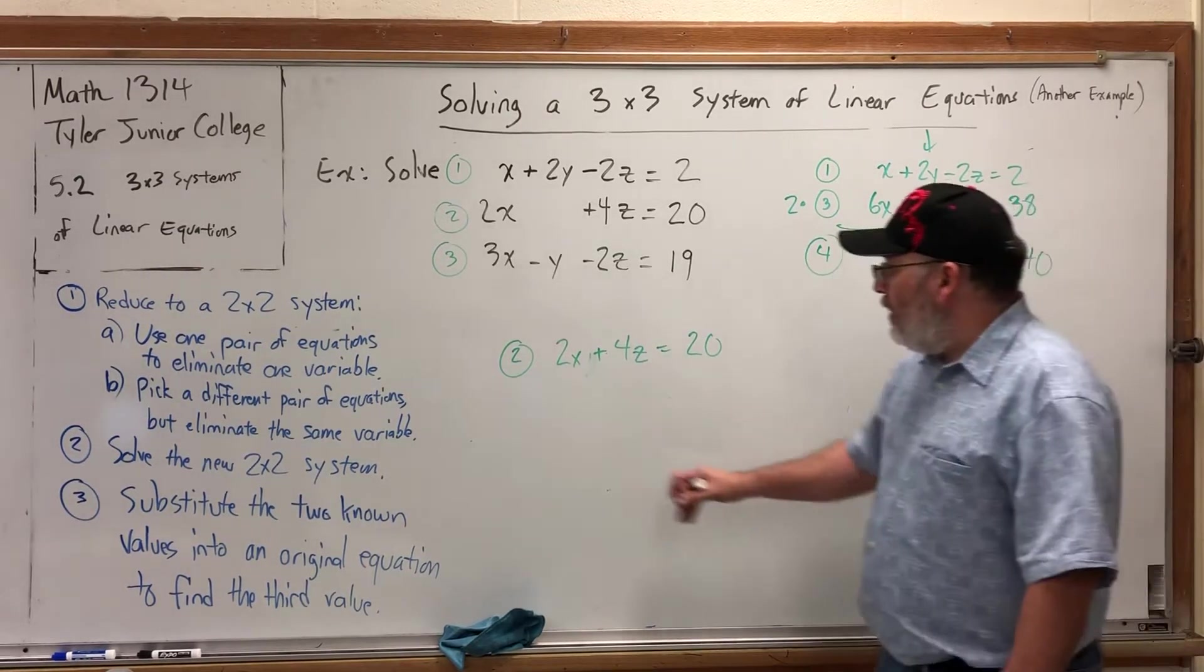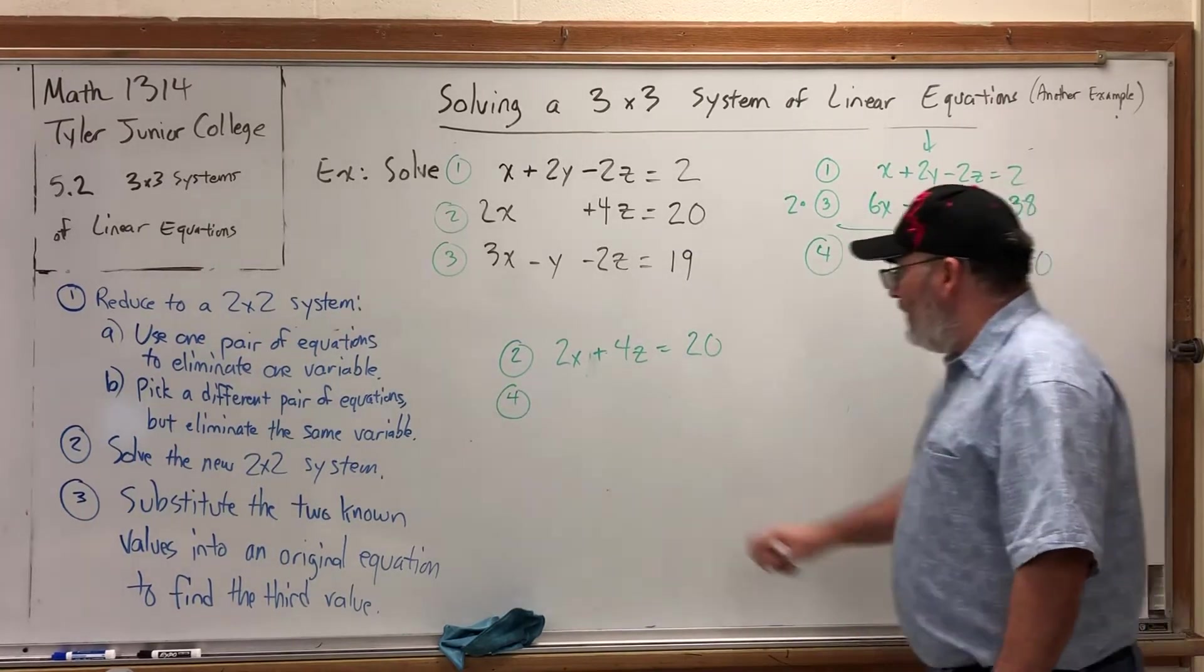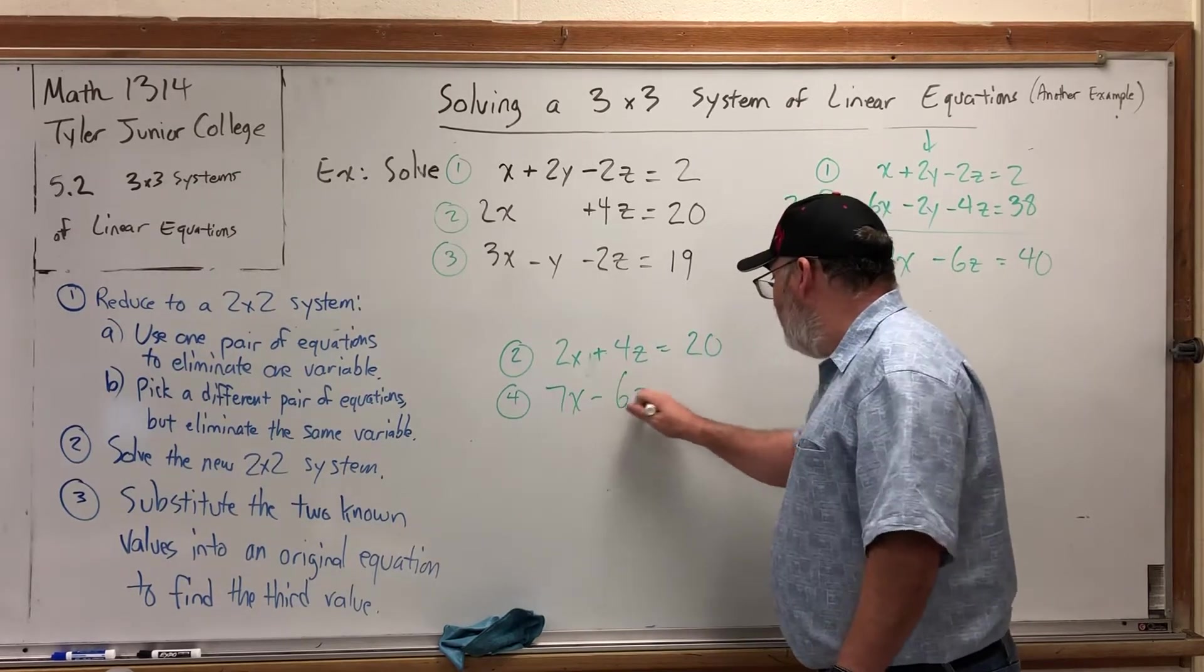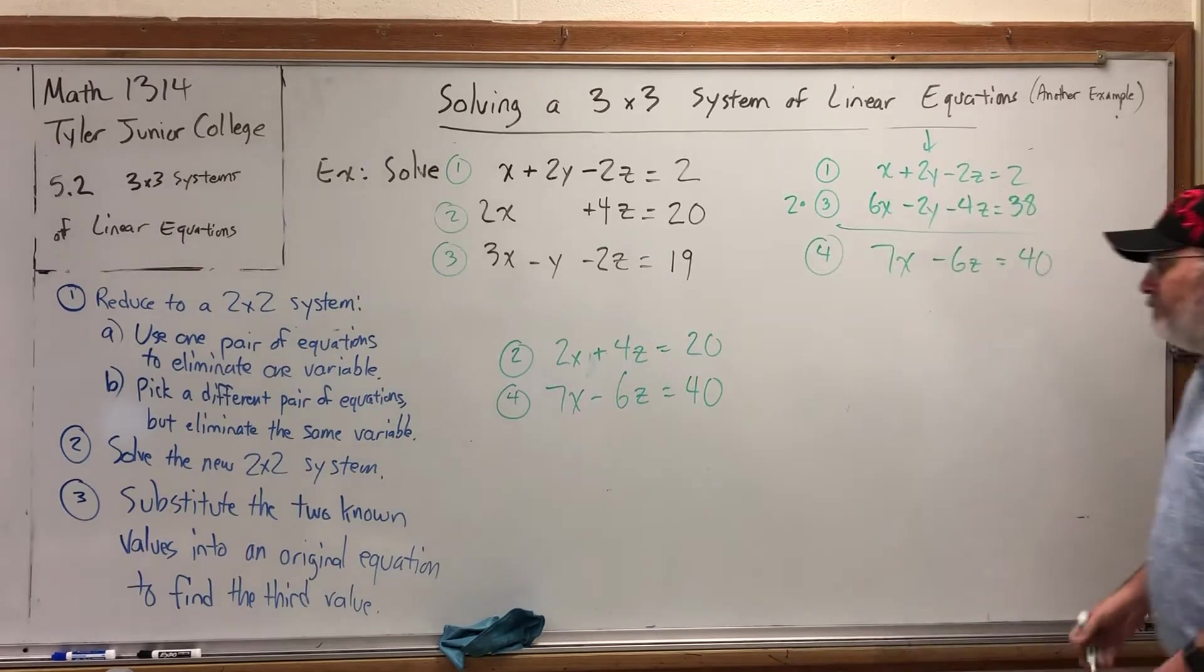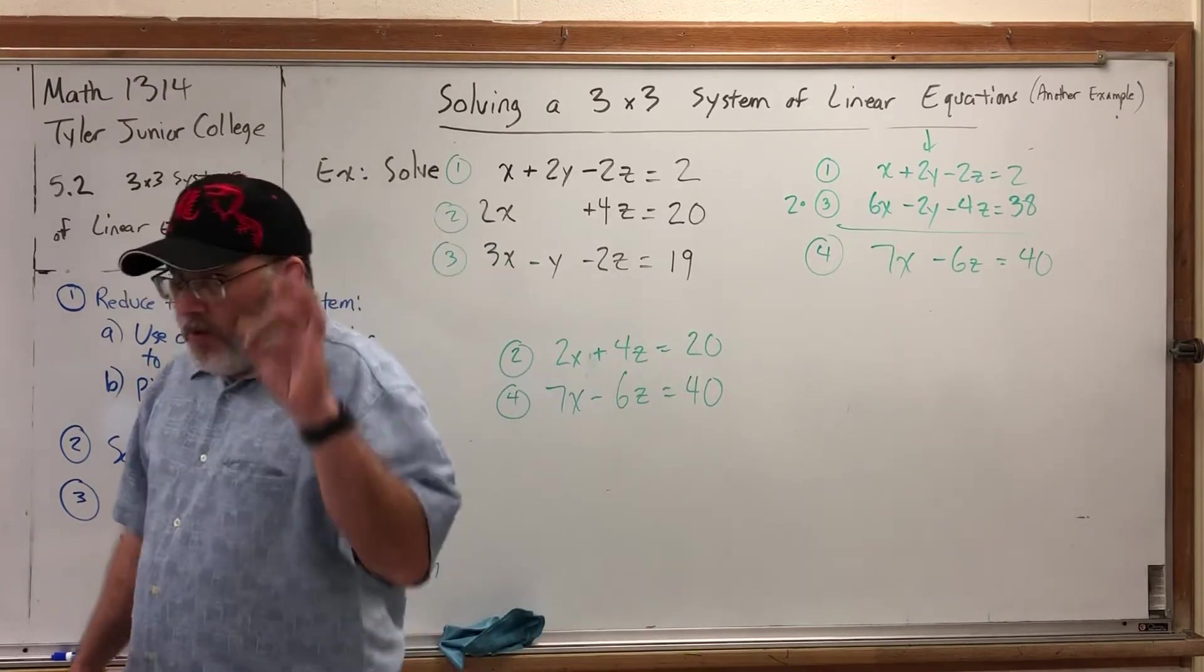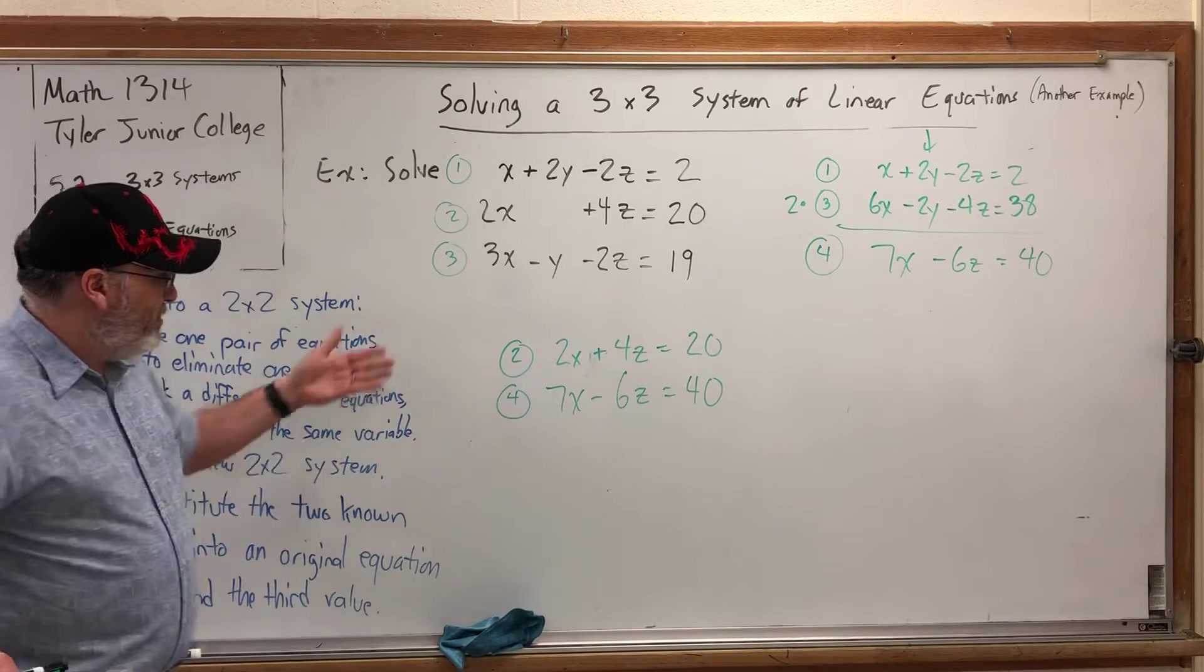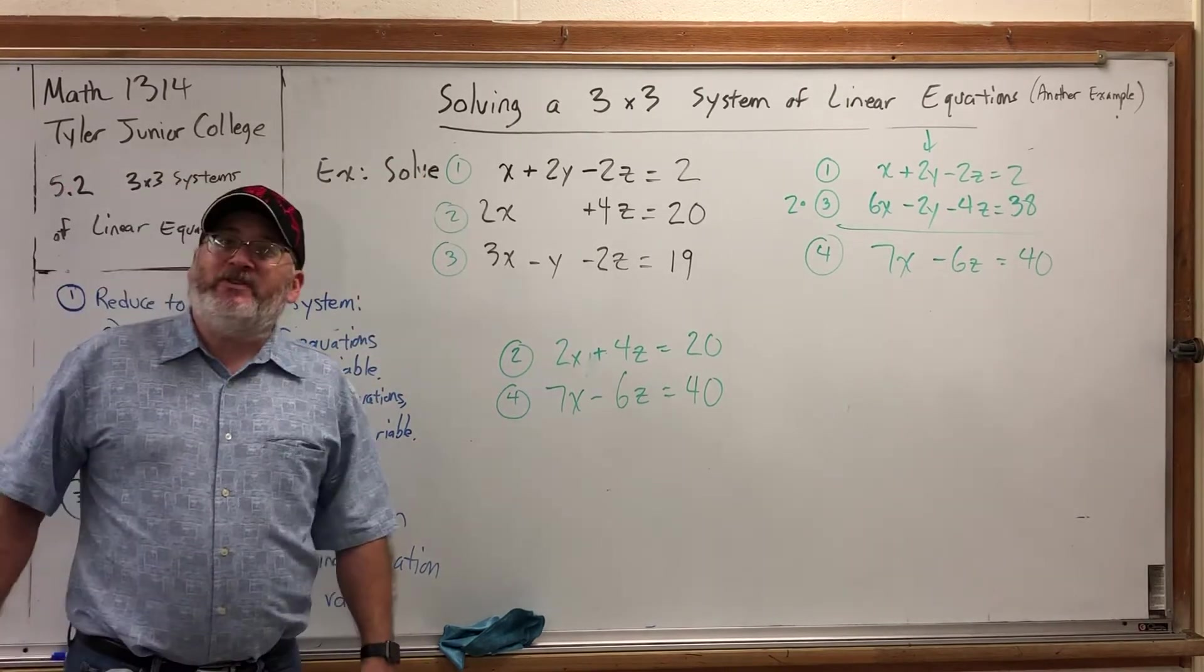Equation 4, along with equation 2 in its original form, is a 2x2 system in x and z. Again, if you're solving a 3x3 system and your plan is to shrink it to a 2x2 system, but one of your equations already has just two variables, take advantage of it, and use the other pair to eliminate the variable that was missing in the first place.